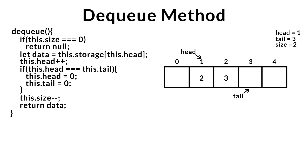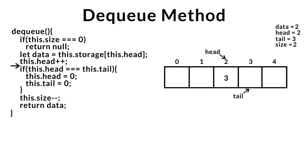Executing our DQ method once more. First, we check to see if the queue is empty — this fails. So we store the data from the front of the queue. Once we have that, we remove the data from the front by advancing the head. After that, we check if we need to reset our queue to save memory — this fails. So we decrement the size and return the data.